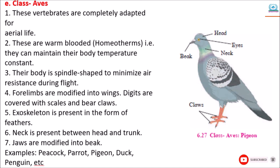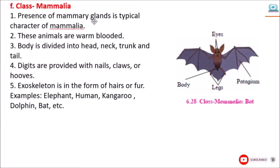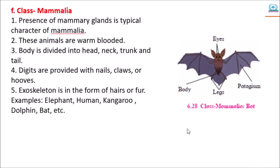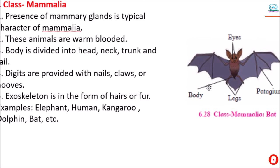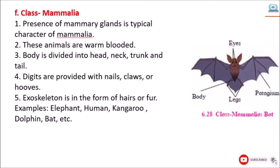The last class is Mammalia — we also are included in this class. Presence of mammary glands is the typical character of Mammalia. These animals are warm-blooded. The body is divided into head, neck, trunk, and tail. Digits are provided with nails, claws, or hooves. Exoskeleton is in the form of hair and fur. Examples: elephant, human, kangaroo, dolphin, bat, etc.